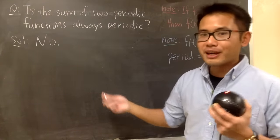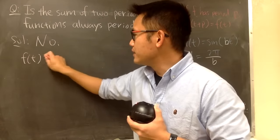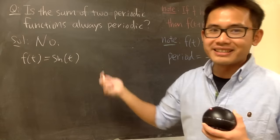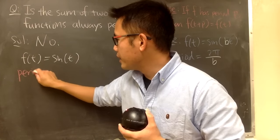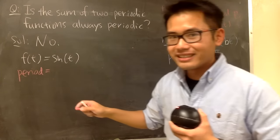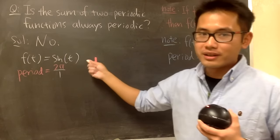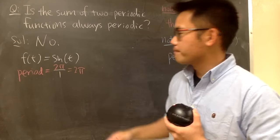So now, here is my counter example for you guys. I will tell you guys the first function, let's say f(t) is equal to sine of t. And based on this, we know that the period is equal to what? 2π over 1, right? Because this is 1t. And of course, 2π over 1 is just 2π.